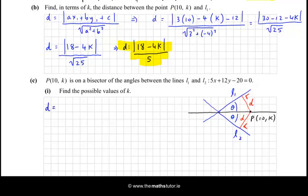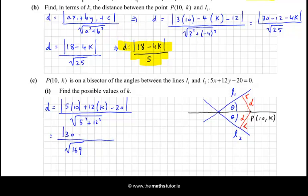So we'll do exactly as we did before. So we'll say d, this time, is equal to |5 times 10 plus 12 times k minus 20| all over the square root of 5² + 12², and 5² + 12² is 25 + 144, which is √169, which is 13, so that's on the bottom. On the top we get 50, take away 20, so that's 30, plus 12k.